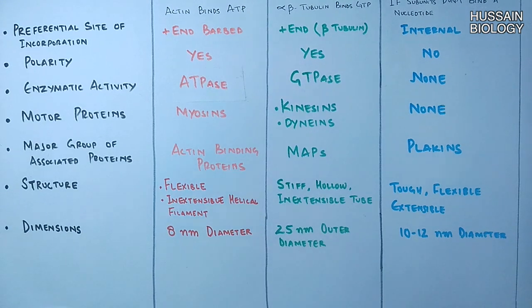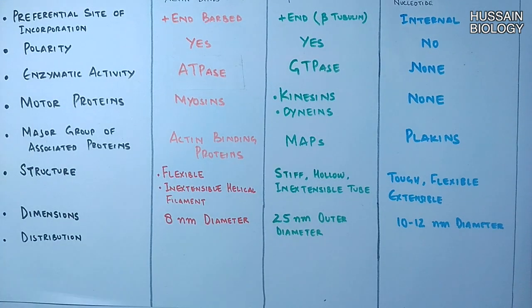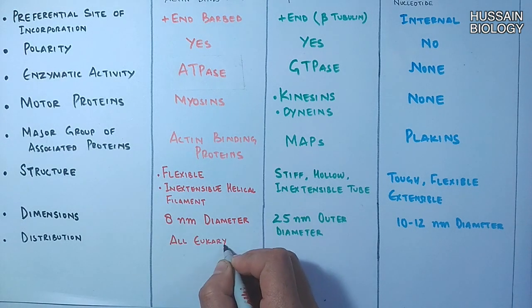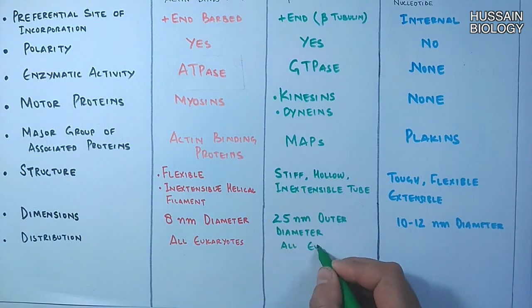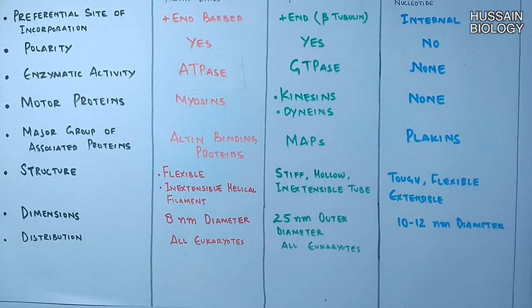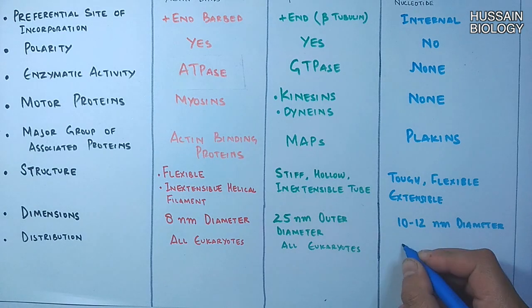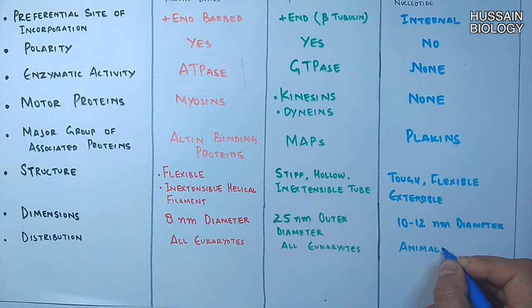In terms of distribution, actin filaments and microtubules are found in all eukaryotes, whereas intermediate filaments are found only in animals.